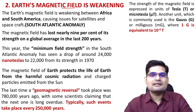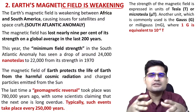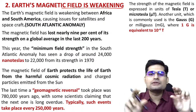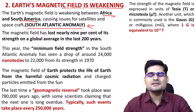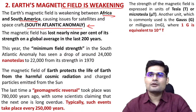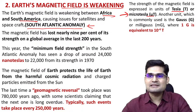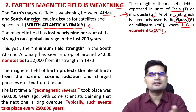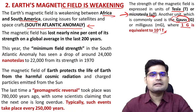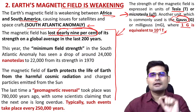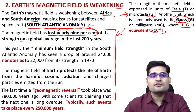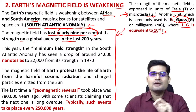The second topic is Earth's magnetic field weakening. This has been in the news for about two to three years, particularly in the South Atlantic Ocean — the area between Africa and South America — also called the South Atlantic Anomaly. The unit of magnetic field is Tesla or micro-Tesla (μT), and also Gauss: one Gauss equals 10⁻⁴ Tesla. The magnetic field has lost nearly 9% of its strength in the last 200 years.